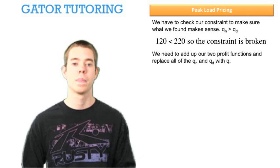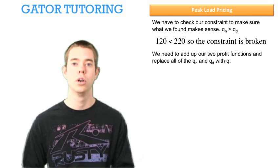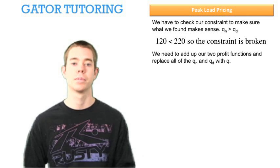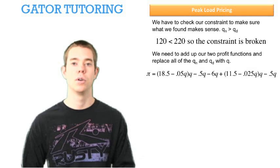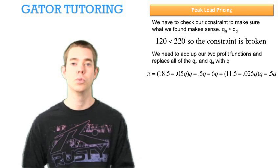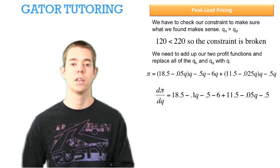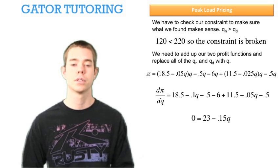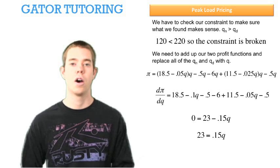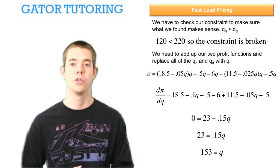We need to go back and replace all of our QN and QD with just Q. We're going to add up our two profit functions and erase the subscript, as shown below. Now we take the derivative with respect to Q and set it equal to 0 to maximize profits. Combining like terms and dividing through by 0.15, our optimal capacity is 153 seats.